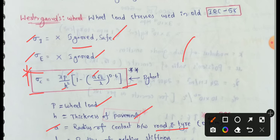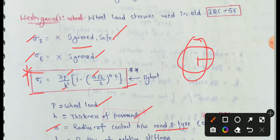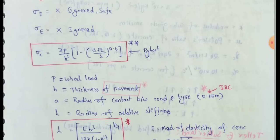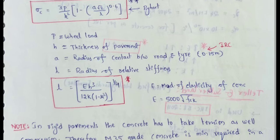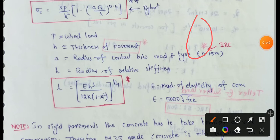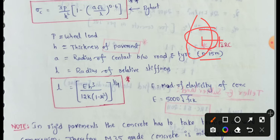If the road and tire contact is formed, it will be formed in a certain shape. But as per IRC, we need to choose the circle shape. We need to choose the radius of this circle, so A means the radius of this circle. As per IRC, this radius is 0.15m. So the Radius of Contact between Road and Tire is 0.15m as per IRC.